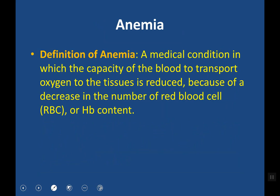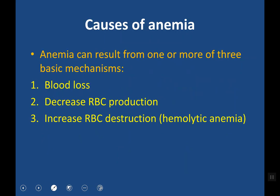What is anemia? Anemia means a reduction in the oxygen-carrying capacity of the blood, and this might result from a reduction in the hemoglobin content or reduction in the RBC count. There are three main causes of anemia: blood loss, decreased RBC production or defect in erythropoiesis, or increased RBC destruction — what we call hemolytic anemia.